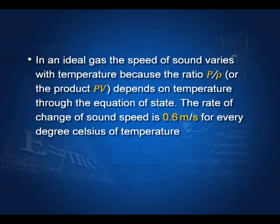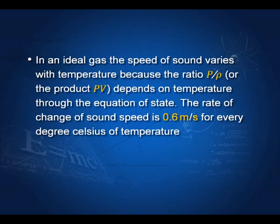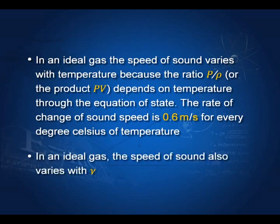In an ideal gas, the speed of sound varies with temperature, because the ratio P by rho depends on temperature through the equation of state. The rate of change of sound speed is 0.6 meters per second for every degree Celsius. The speed also varies with gamma, as seen in the formula.